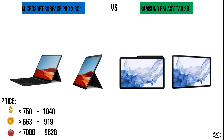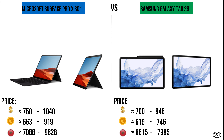For pricing, the Microsoft Surface Pro X SQ1 starts from $750 and goes up to $1,040 depending on the chosen storage or RAM. The Samsung Galaxy Tab S8, released in late February 2022, starts from $700 up to $845. These prices do not include accessories like the stylus, so you should consider an additional $100 to $200.